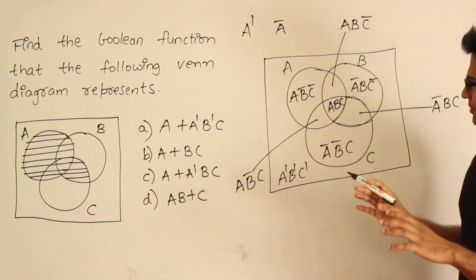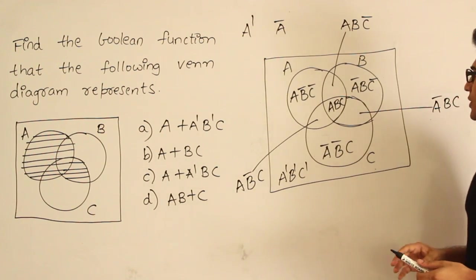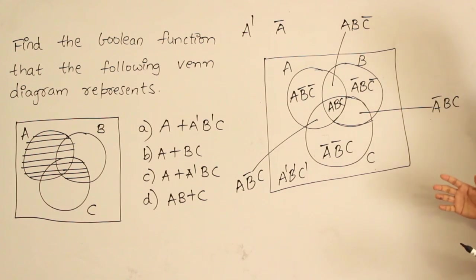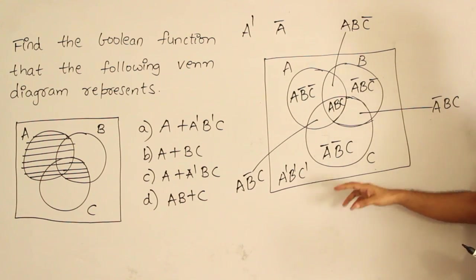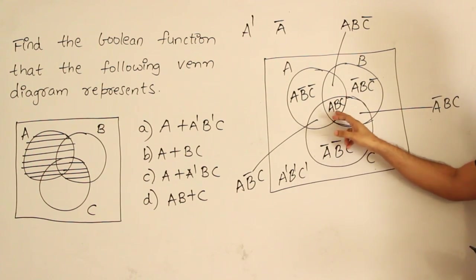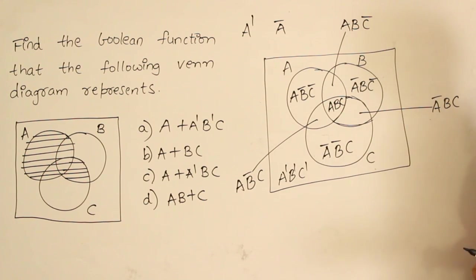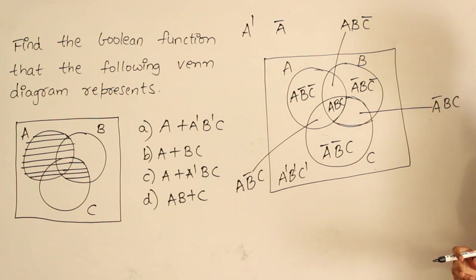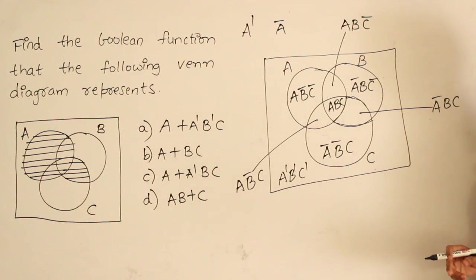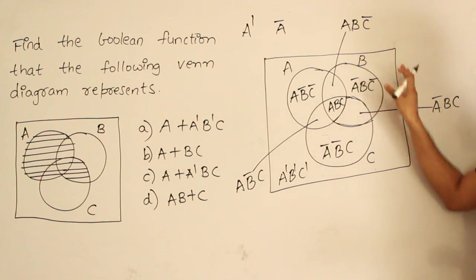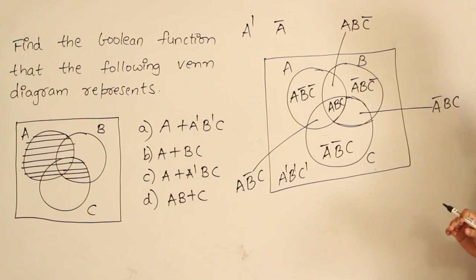Now count the number of minterms we got: 1, 2, 3, 4, 5, 6, 7, 8. Therefore if we have 3 variables, the number of input combinations is 8. The number of minterms is 2 power 3, which equals 8. So there are 8 possible minterms.